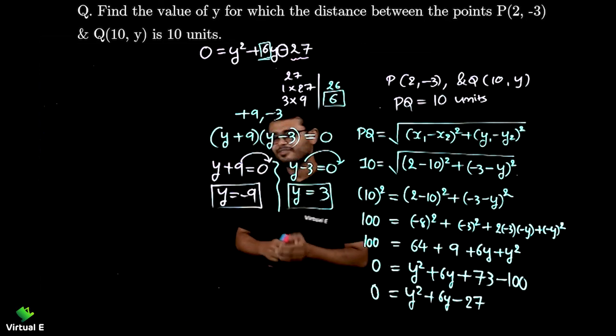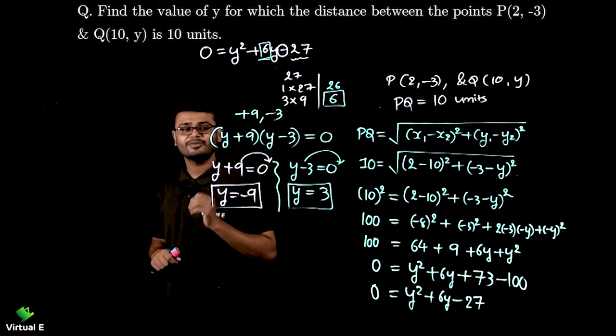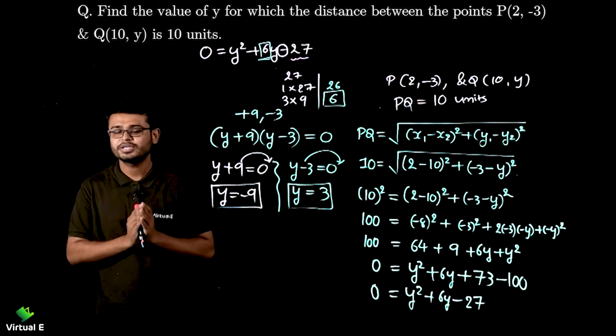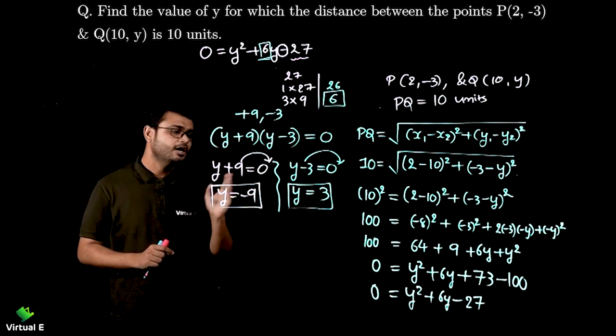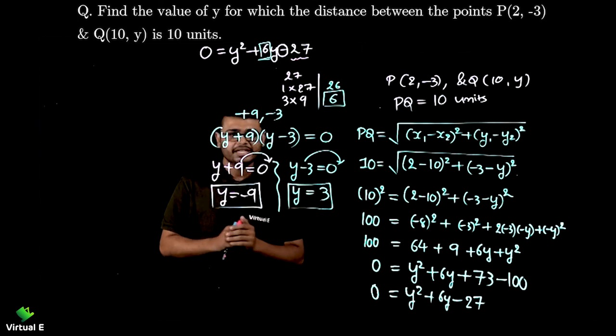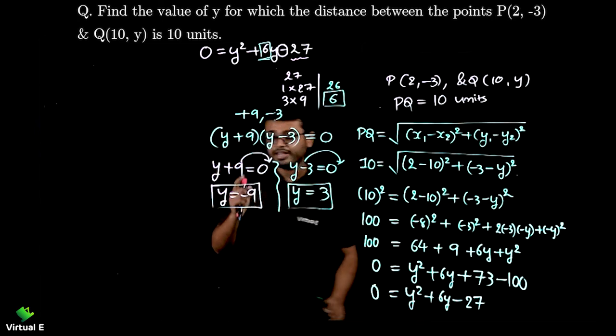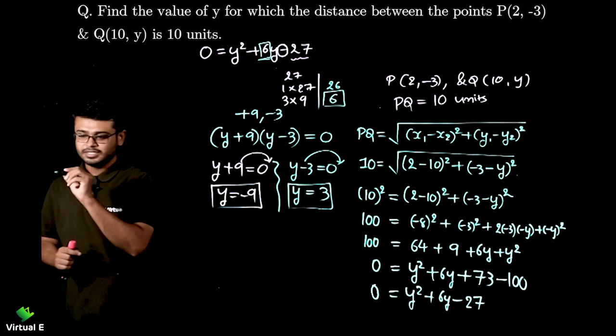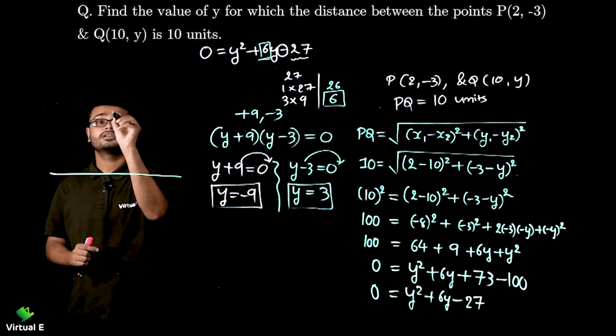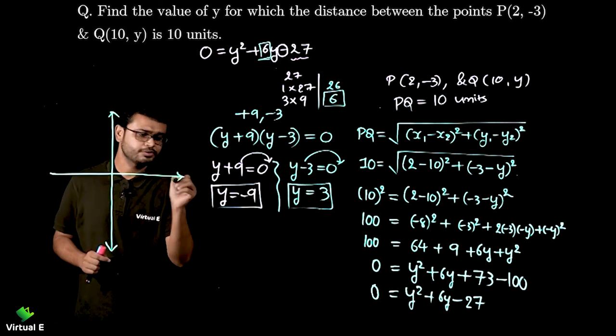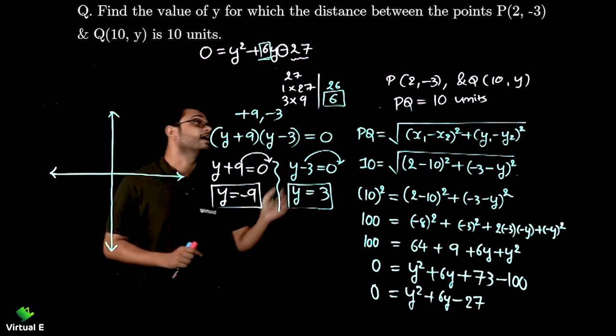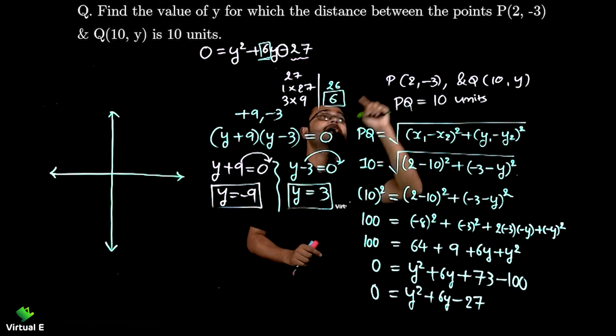Now here we are not going to think that which of them is correct and which is incorrect. We are not going to discuss like that because coordinates can have negative value as well along with the positive. Let me explain why we are getting two solutions. I am repeating this is just for the purpose of understanding. So no need to do an exam.